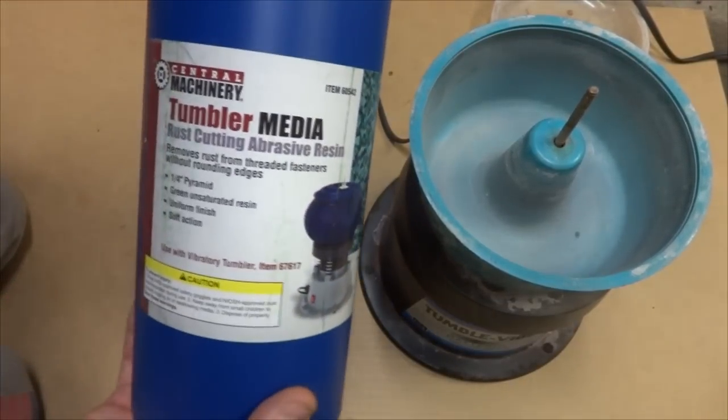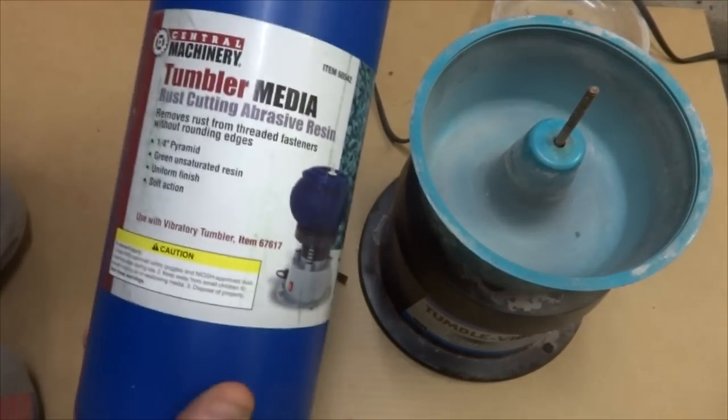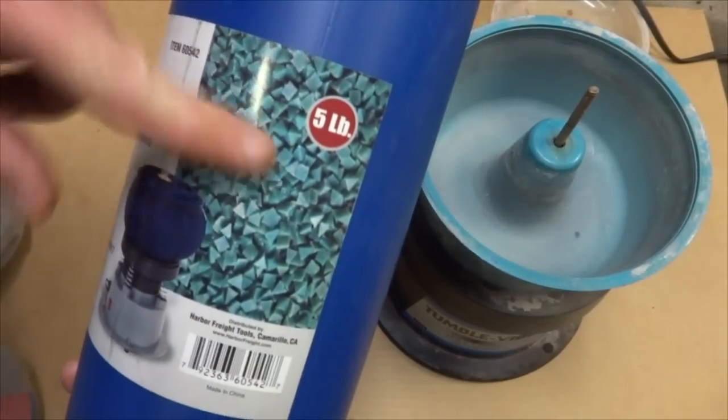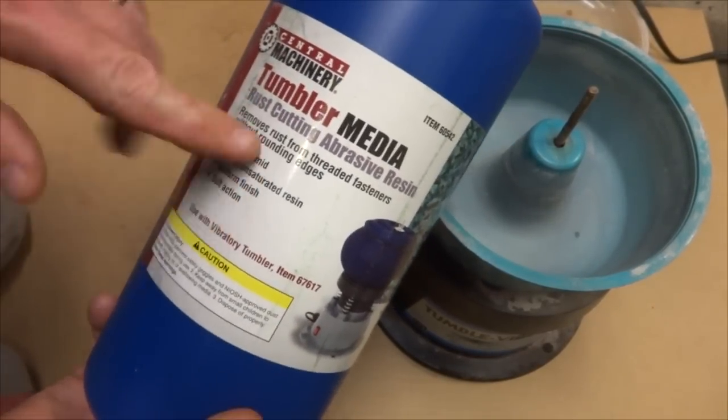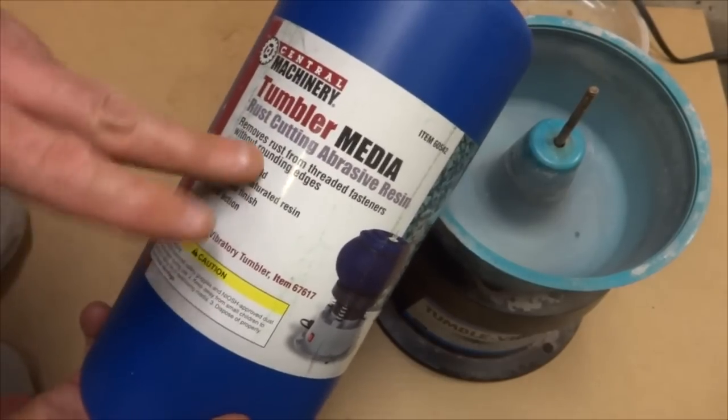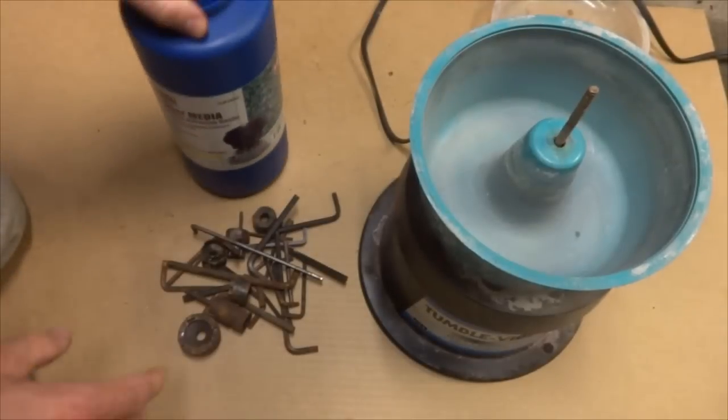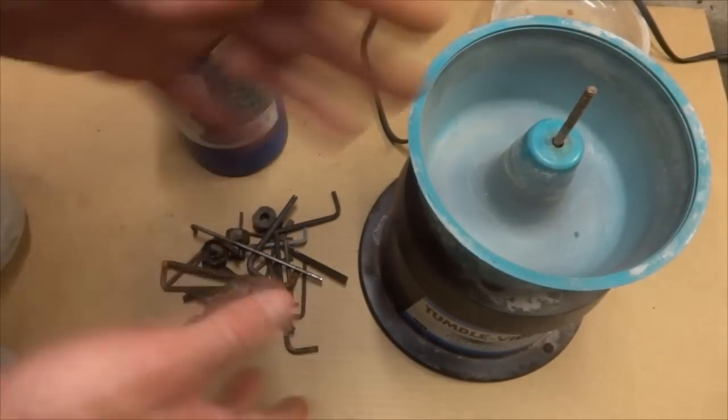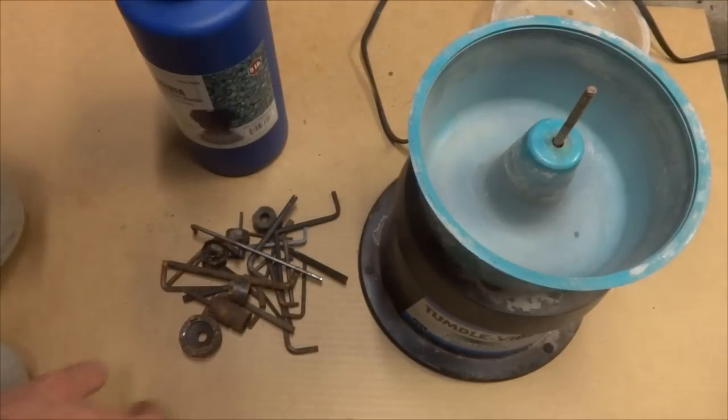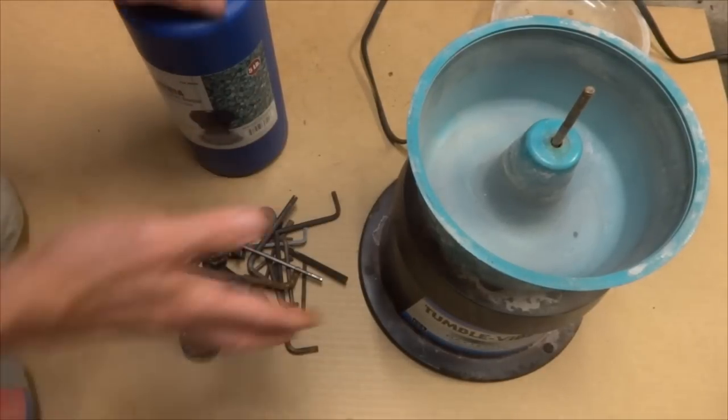I went to Harbor Freight and bought some rust cutting abrasive resin. It's these little green triangles here and they're designed to remove the rust without damaging the threaded parts of these tools. Hopefully it should just remove the rust but leave the tools, not round them off or anything like that. I'm going to give this stuff a shot and see how well it works.